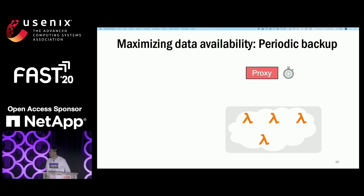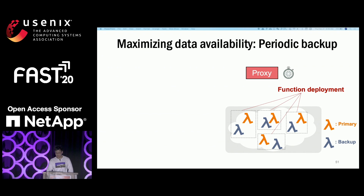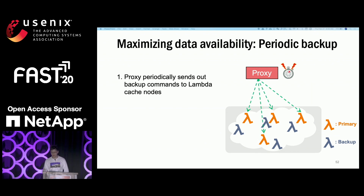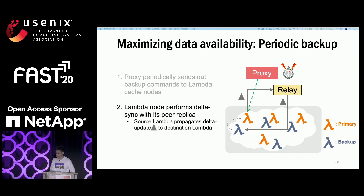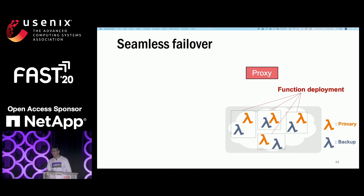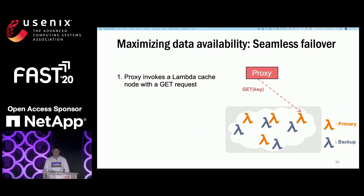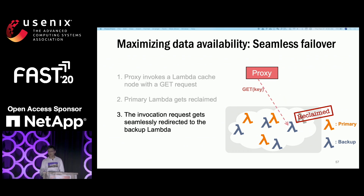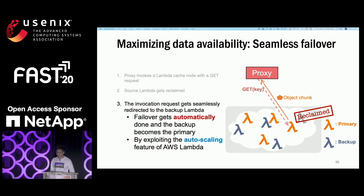For periodic backup, to further maximize data availability, each Lambda cache node creates its own peer replica, meaning each function deployment has two replicas. When the proxy sends backup commands, each Lambda cache node transfers data to its peer replica through a relay — a process co-located with the proxy server. When a primary Lambda gets reclaimed and the proxy invokes it with a GET request, AWS automatically invokes the backup Lambda instead. The peer replica becomes the new primary, and failover is automatically handled by exploiting the auto-scaling feature in AWS Lambda.